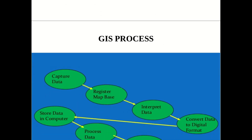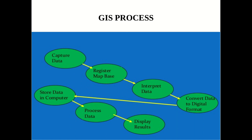Moving to the next slide — GIS Process. How does GIS process data? It captures the data and then registers it on a map basis. It interprets the data, converts it to digital formats, and stores it in the system. Then it processes the data and displays the results.